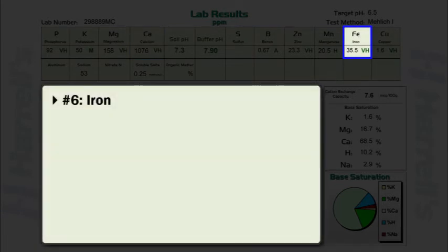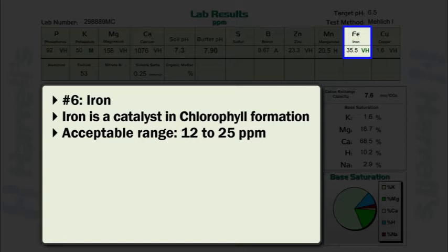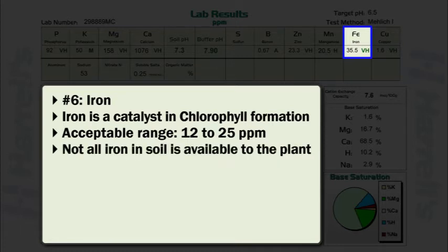Iron is an important micronutrient element notably utilized as a catalyst in chlorophyll formation. Therefore, soil test iron levels should be reviewed prior to other micronutrients. The acceptable range for iron is 12 to 25 parts per million. It should be noted, however, that direct correlations regarding soil iron content and plant responses have not been clearly established. So while many soils may contain large quantities of iron, the possibility for that iron to be plant unavailable exists.